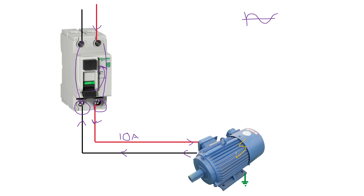If, say for example, this motor develops a fault inside — maybe some of the insulation breaks down and some of the current makes its way to earth — that means that less current will be returning. So say for example, we had a steady state current of 10 amps and now only 9 amps is returning. At that time instant, we will find that there's an imbalance and this earth leakage or this RCD will then trip, disconnecting the current because of that imbalance. And that's one of the reasons why it's called an earth leakage because the current most of the time is leaking to the earth.